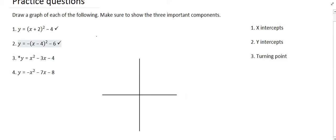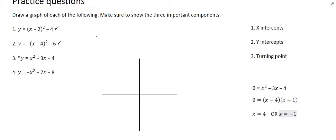The next example has a star next to it, simply because it has not been given in turning point form, so we will have to use another method to find the turning point. As always, we start with the x-intercepts by making y equal to zero. We can factorize in this case, and doing so gives x equals 4 or minus 1. We can now locate these on the diagram.